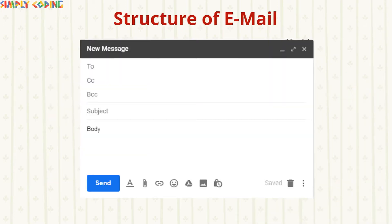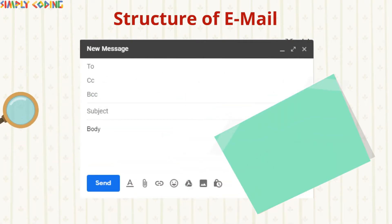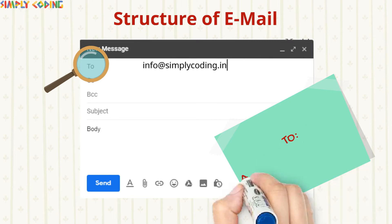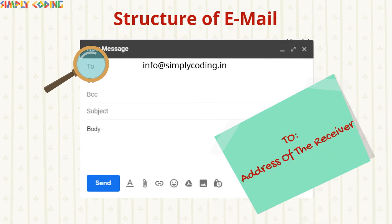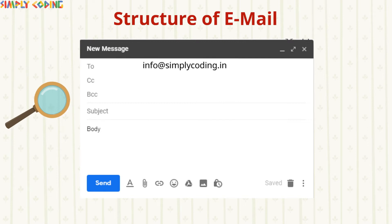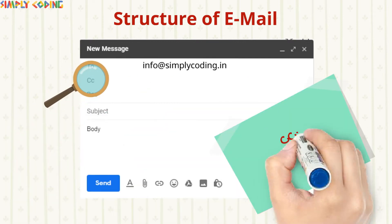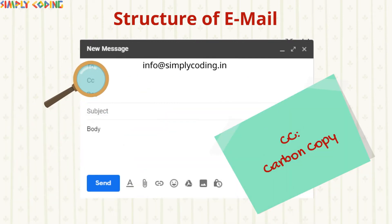Email typically has the following structure. When you are writing an email, you will see a To field. This is the address of the receiver to whom the email is sent. Then there is CC, which stands for Carbon Copy. These are a list of people who also receive a copy of the message. This list is visible to the receiver.